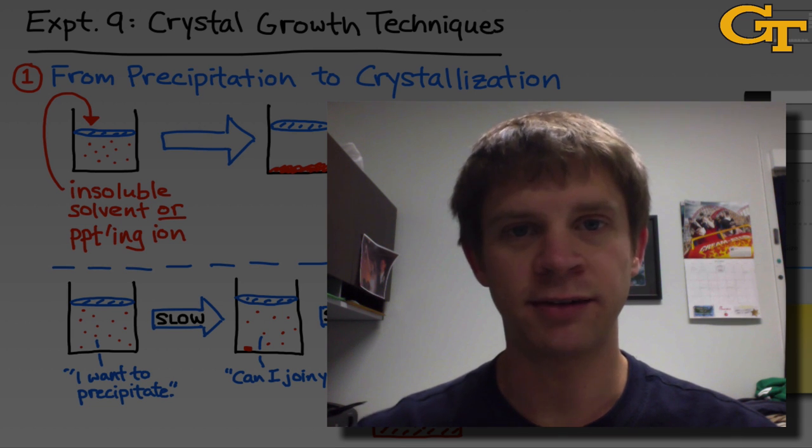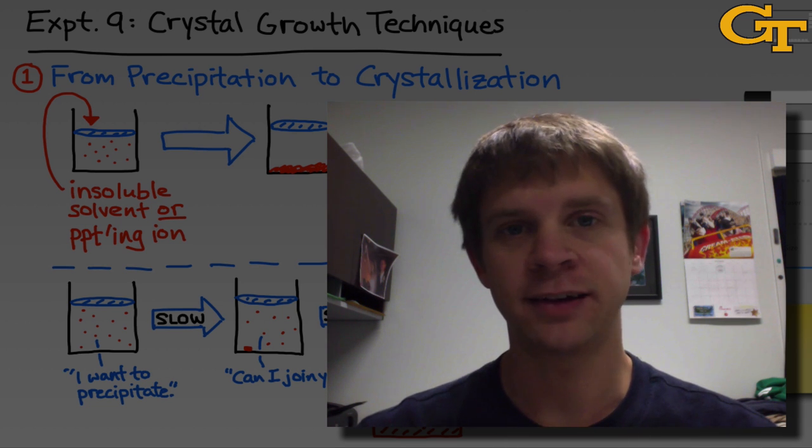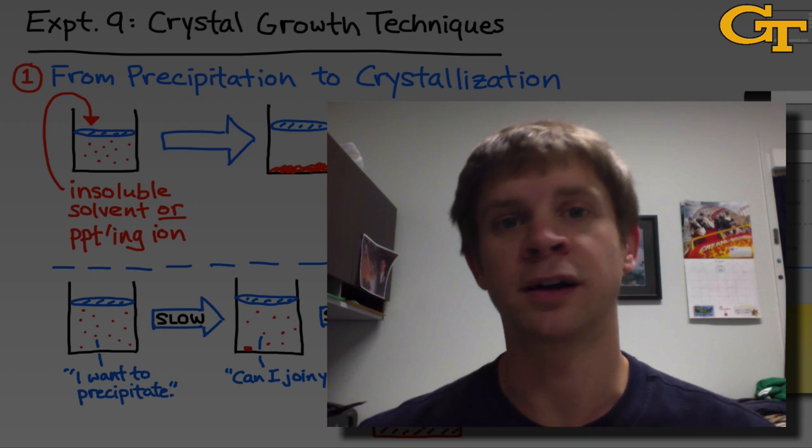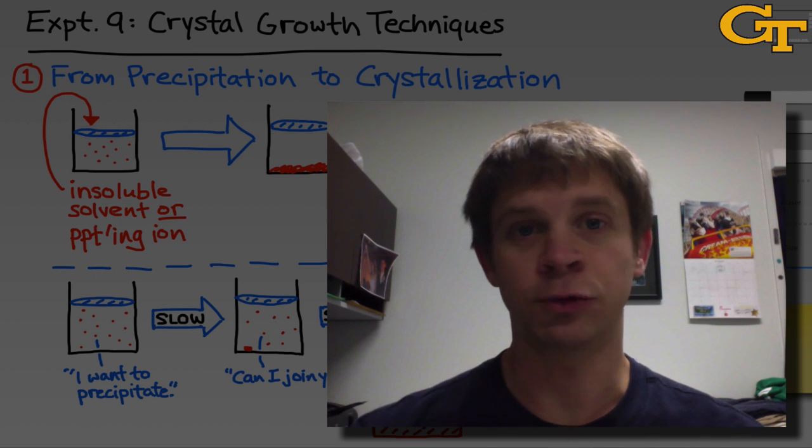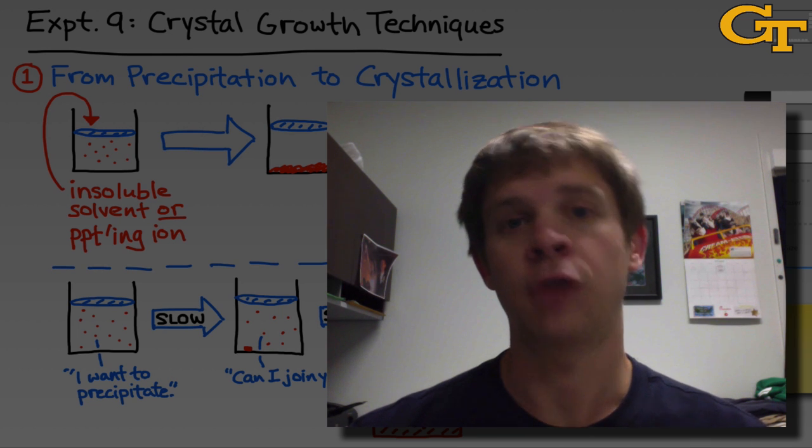Experiment 9 in Chem 12-11 is titled Crystal Growth Techniques, and in this experiment, we'll investigate methods for the growing and observation of crystals, which are solids that contain a regular array of particles arranged in a lattice.